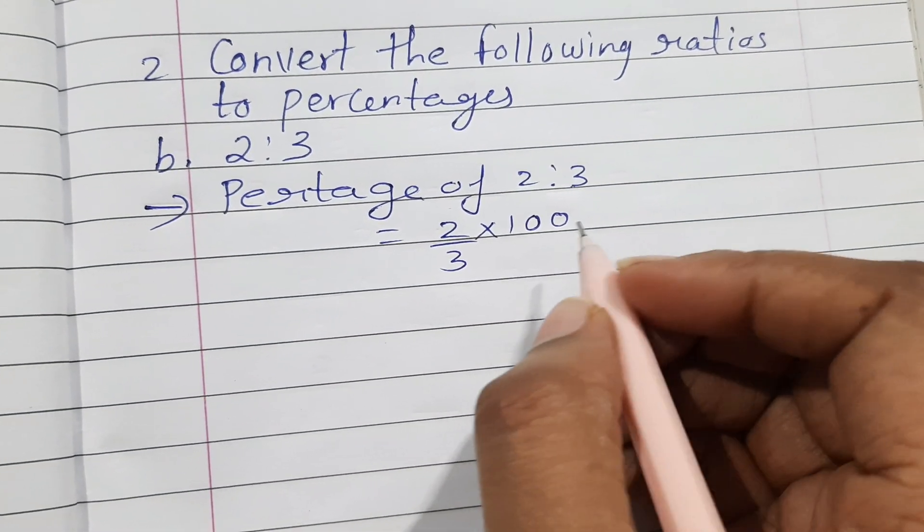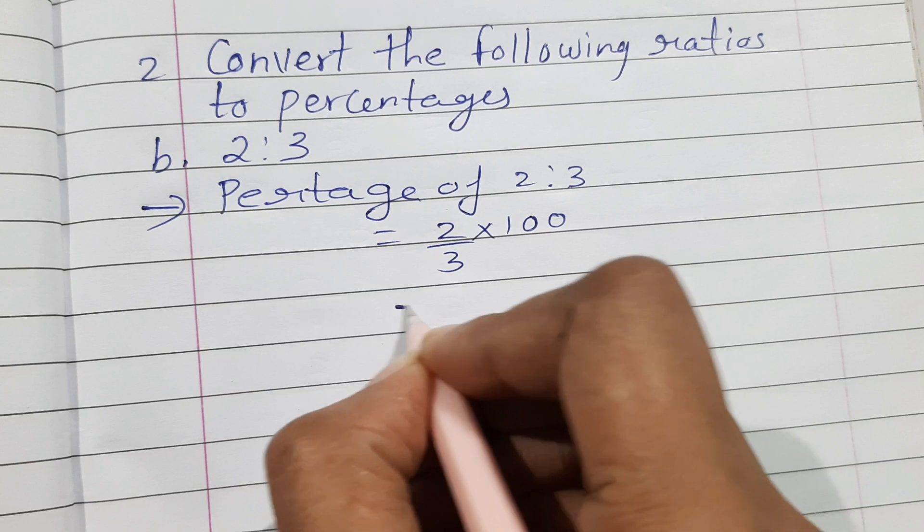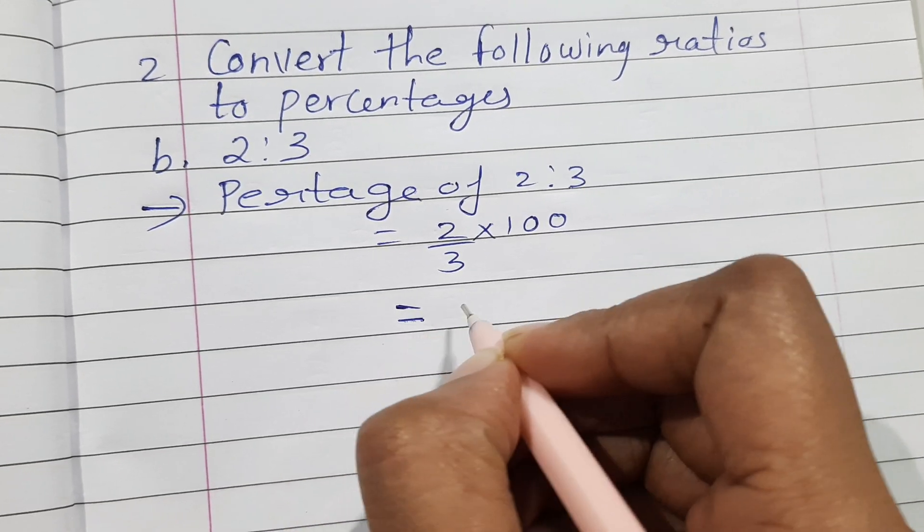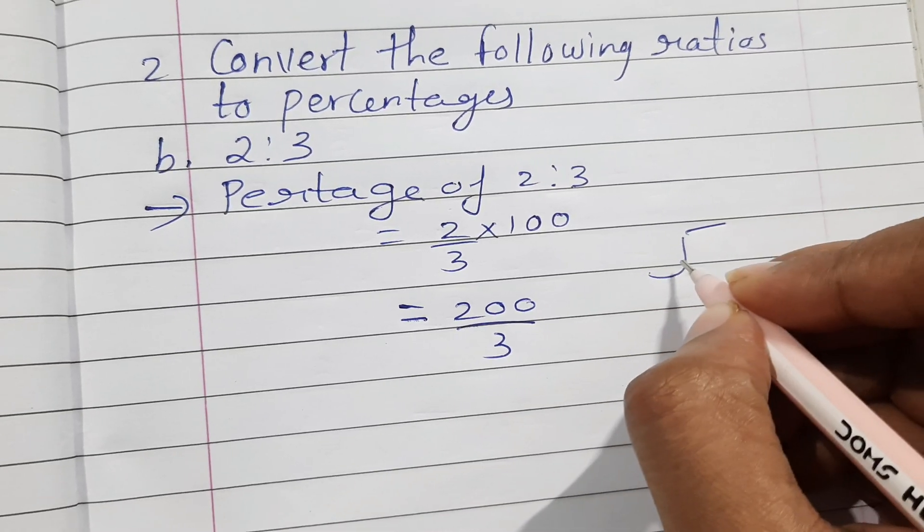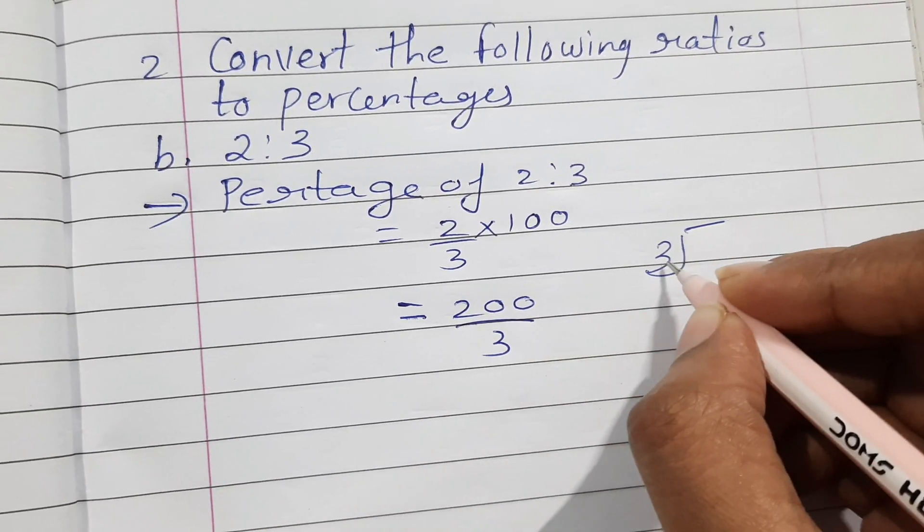So what will be the answer over here? 200 upon 3. So I can divide and see. Put the denominator over here and the numerator over here.